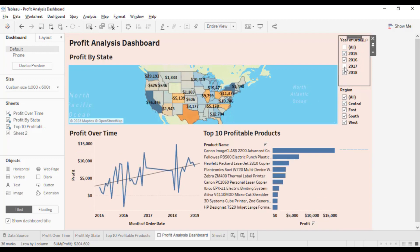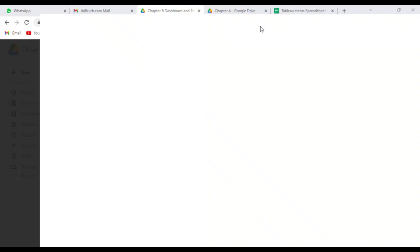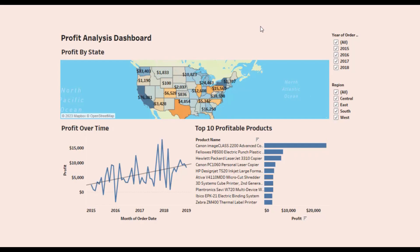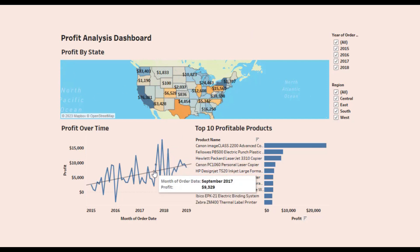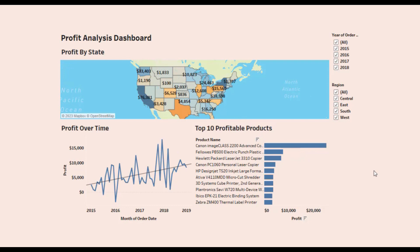Now it's all done. Click on the slideshow to check your dashboard. It has three views: Profit by State, Profit Over Time, and Top 10 Profitable Products. We also used two filters to filter out the specific data we want. That's it for this video on how to create a dashboard in Tableau. I hope you liked this tutorial. Thanks for watching.